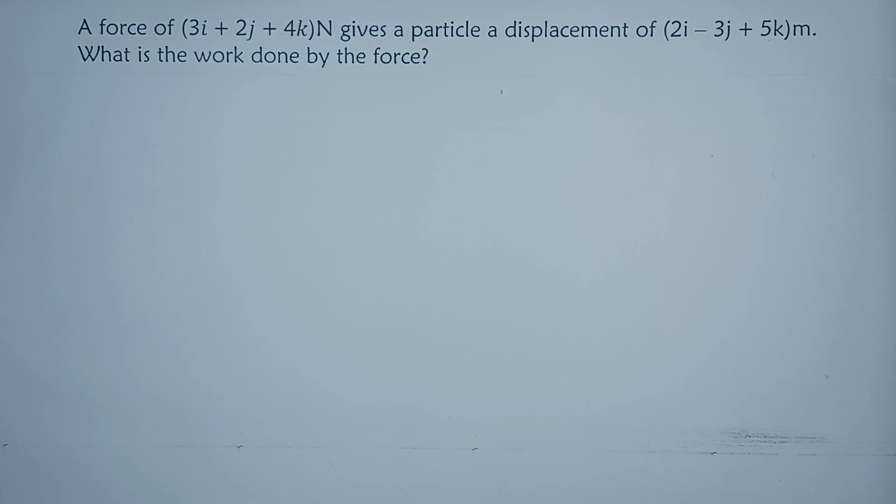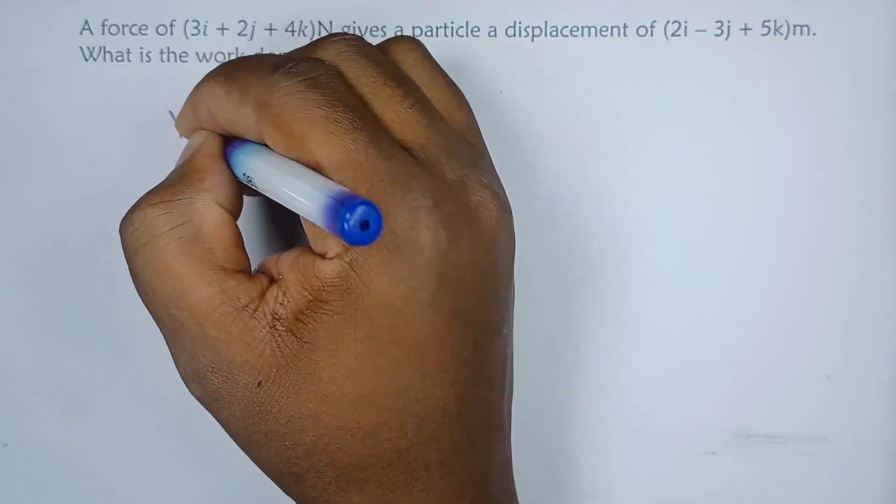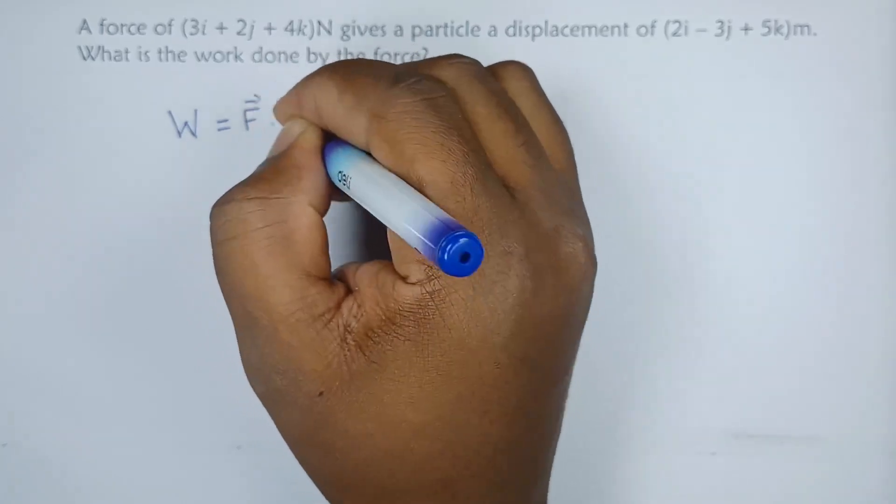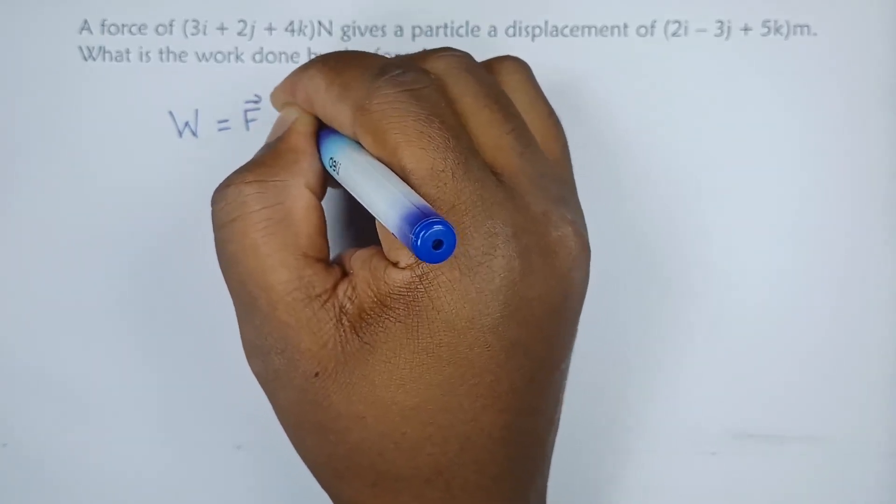Now these are in vector form and we know first of all that work done is equal to force. In this case the force is a vector and the displacement is also a vector.